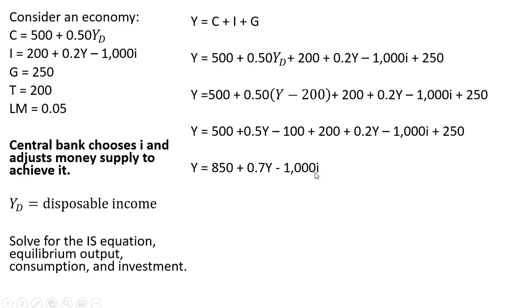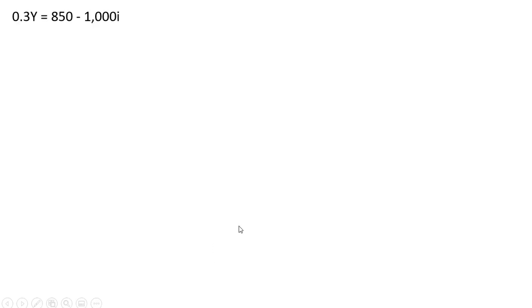Simplifying the right-hand side, collecting our constants and our Y terms. Subtracting 0.7Y from both sides. So on the left-hand side now we have 1Y minus 0.7Y or 0.3Y. And let's divide through by 0.3.